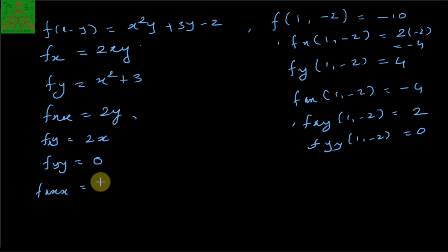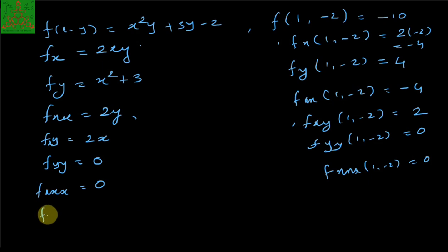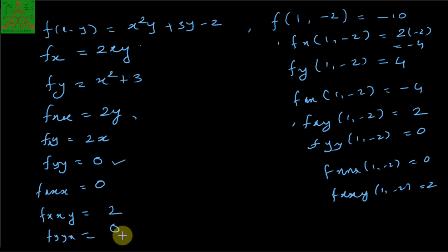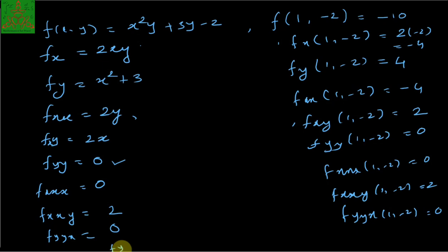Differentiating f_xx with respect to x gives 0, so f_xxx(1,−2) = 0. f_xxy = 2, so f_xxy(1,−2) = 2. f_yy: differentiating f_y = x² + 3 with respect to y gives 0, so f_yy(1,−2) = 0. f_yyy is also 0.